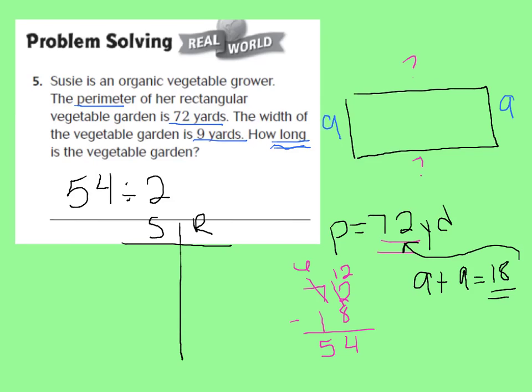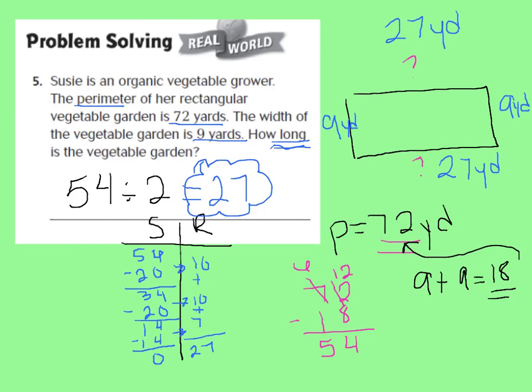Figure out 54 divided by 2. Using repeated subtraction, you should get 27 because 54 divided by 2 is 27. That means each length was 27 yards. Let's verify: 9 plus 9 is 18, and 27 plus 27 is 54, and 18 plus 54 is 72 — which is the perimeter. The vegetable garden is 27 yards long.